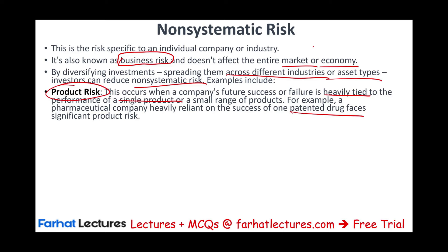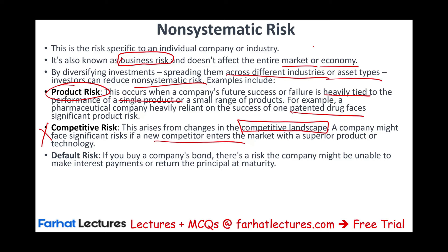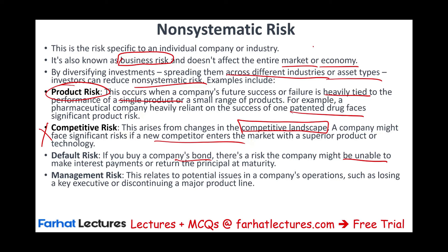Competitive risk happens when the competitive landscape changes not in your favor — a company may face significant risk if new competitors enter the market with a superior product or technology at a cheaper rate. Default risk is the risk that a company may not be able to pay back your money or interest on a bond you purchased. Management risk occurs when a company loses a key executive — for example, if Elon Musk were to leave Tesla, that could be a problem for the company.